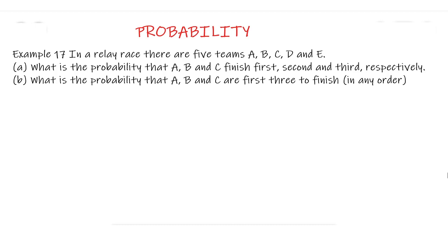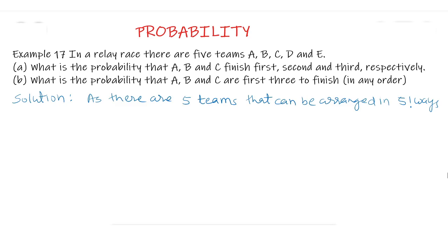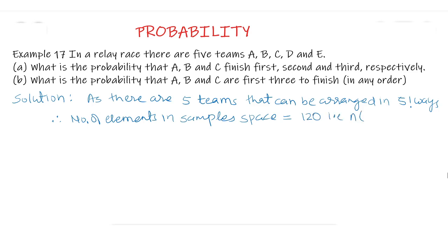We solve the questions like this. As there are 5 teams that can be arranged in 5! ways. Therefore, the number of elements in the sample space equals 5! which is equal to 120.